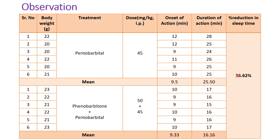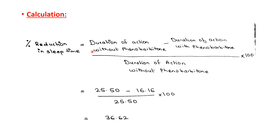We then calculate the percent reduction in sleep time. The formula is: duration of action without phenobarbital minus duration of action with phenobarbital, divided by duration of action without phenobarbital, multiplied by 100. This gives us: (25.50 − 16.16) ÷ 25.50 × 100 = 36.62%. This is the percent reduction in sleep time.